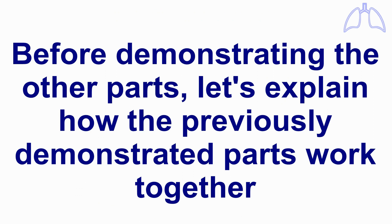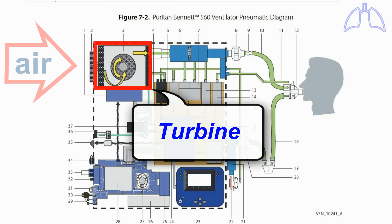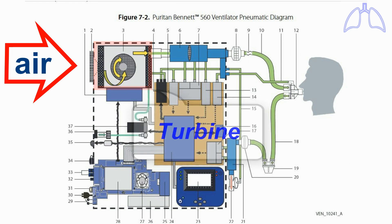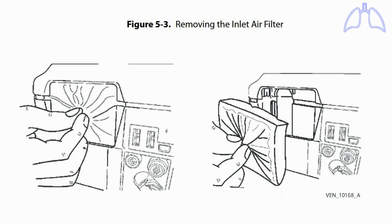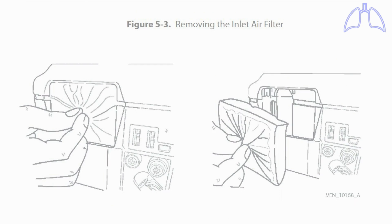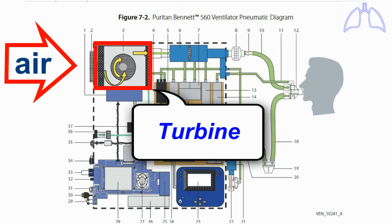Before demonstrating the other parts, let's explain how the previously demonstrated parts work together. The turbine draws in air from atmosphere. The air flows through the air inlet filter, which is a replaceable air filter, then it flows to the turbine.